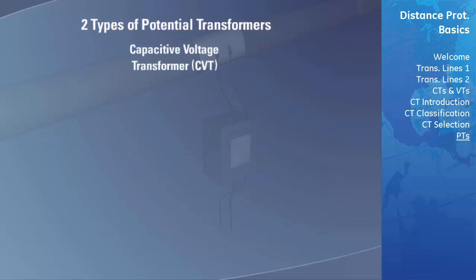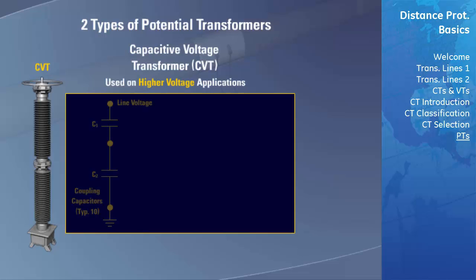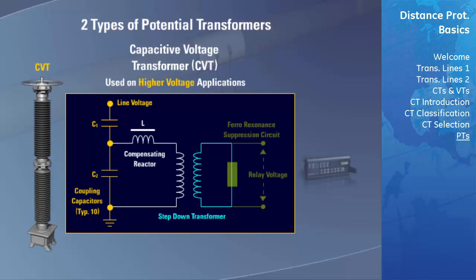Capacitive voltage transformers, or CVTs, are normally used on higher voltage applications. The CVT is basically a capacitance potential divider and consists of the following components: coupling capacitors (typically 10), a compensating reactor, a step-down transformer, and a ferro-resonance suppression circuit found just before the output terminals for connecting to a relay.